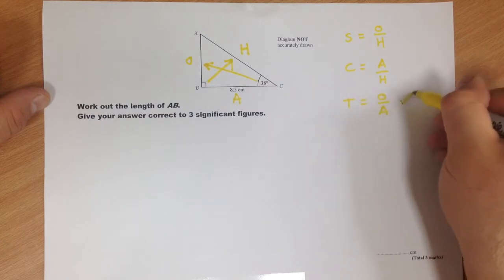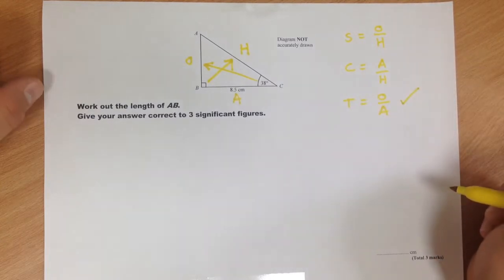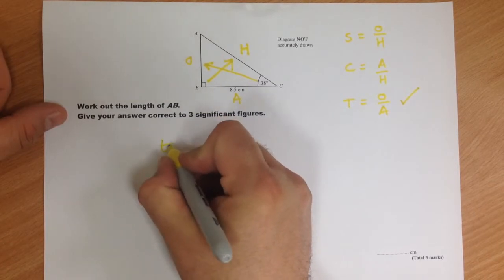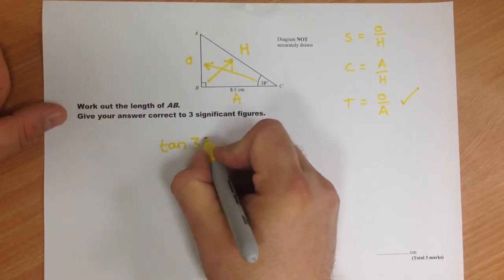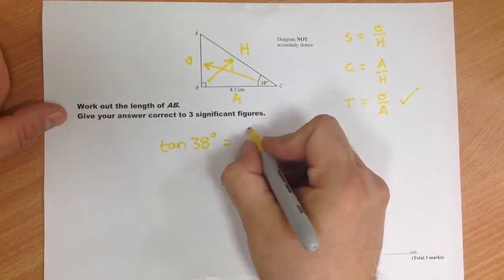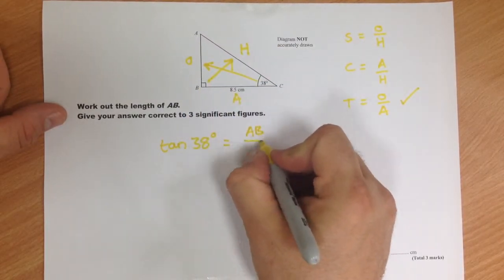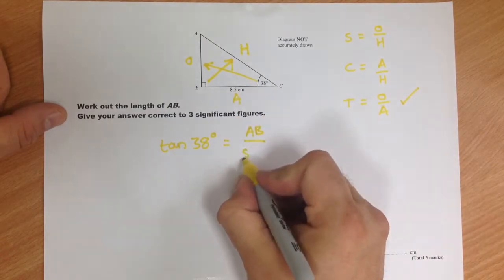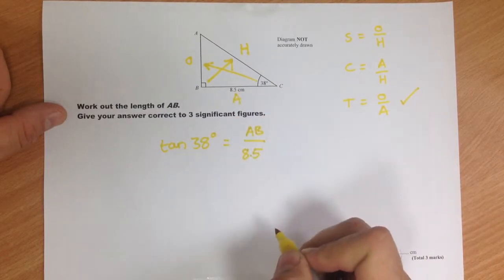And it's that one. So substitute in what you know. We've got tan 38 degrees equals AB, which is our opposite, divided by 8.5, which is our adjacent.